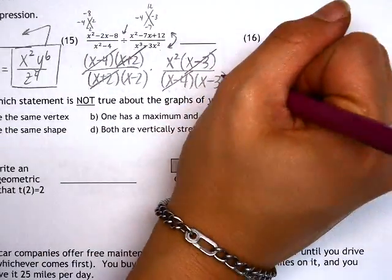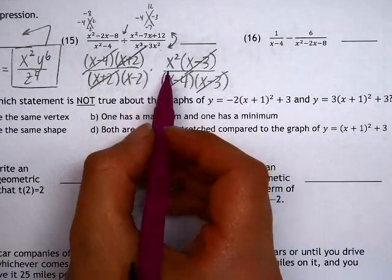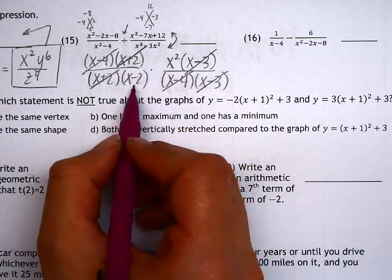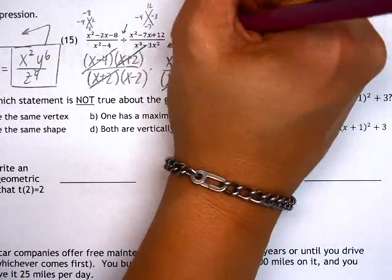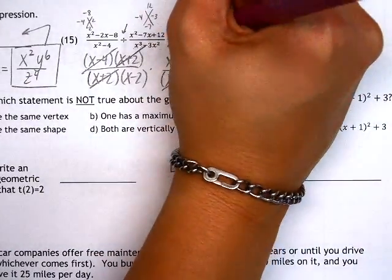We can also cancel x - 3 top and bottom. So since we don't have anything that matches x² and we don't have anything on the bottom that matches x - 2, we're going to leave those terms: x² on top, x - 2 on the bottom.